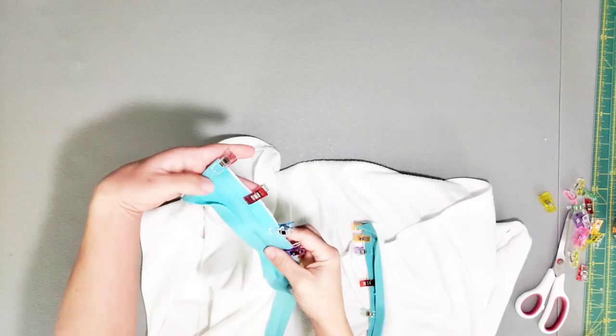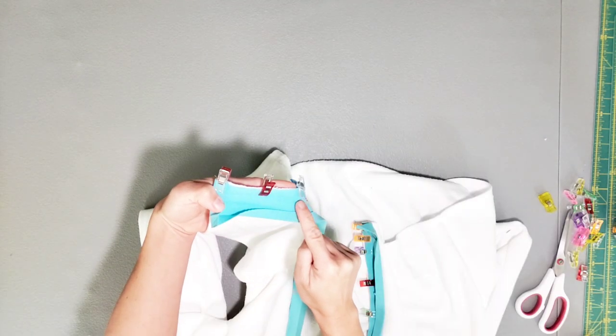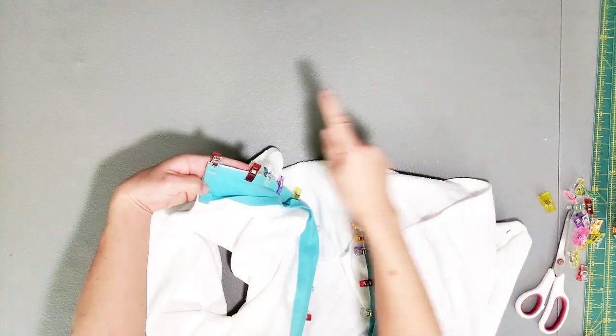Now we're going to take it to our machine and sew along the nearest fold we made while ironing our bias tape from hem all around to the other hem.